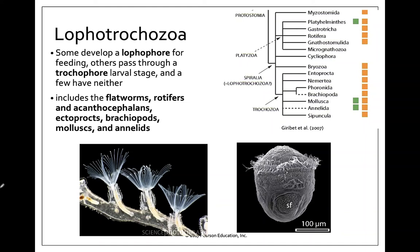Lophotrochozoa makes up one of the three large groups of bilateral invertebrates. It's named not necessarily for shared characteristics, but for common characteristics seen in several groups, though not necessarily every group. These organisms are mostly grouped together based on genetic sequencing. The name 'lopho' comes from the lophophore, a filter feeding apparatus, and 'trocho' comes from the trochophore — a trochophore larva with a ring of cilia around the top.